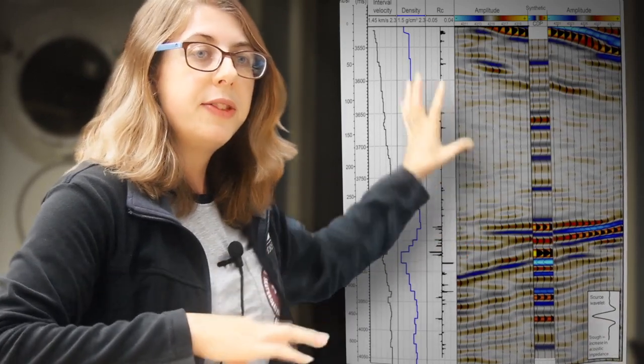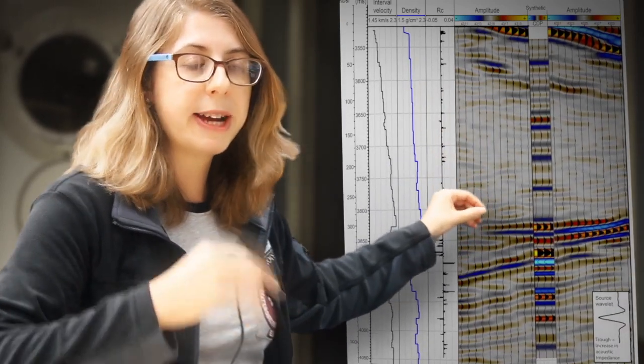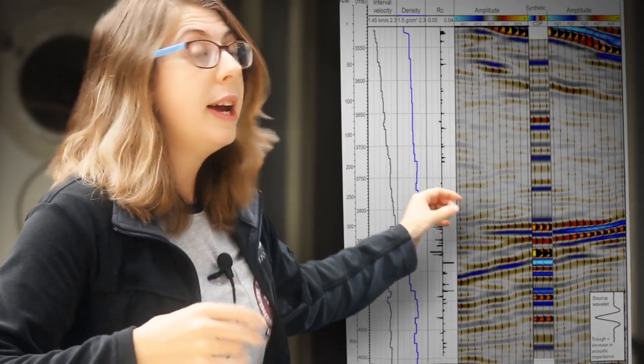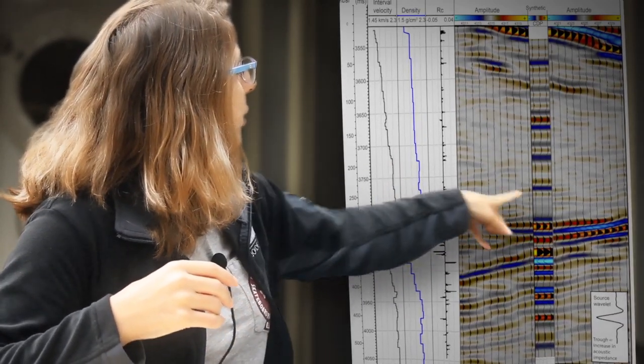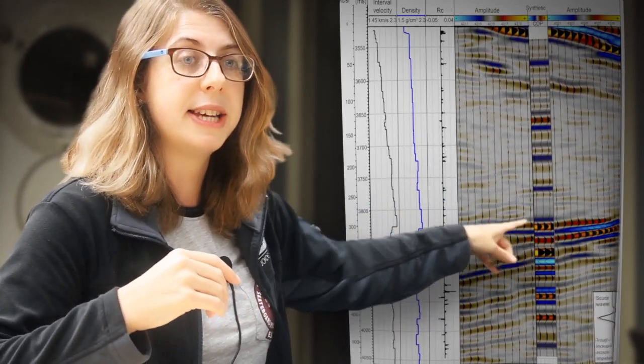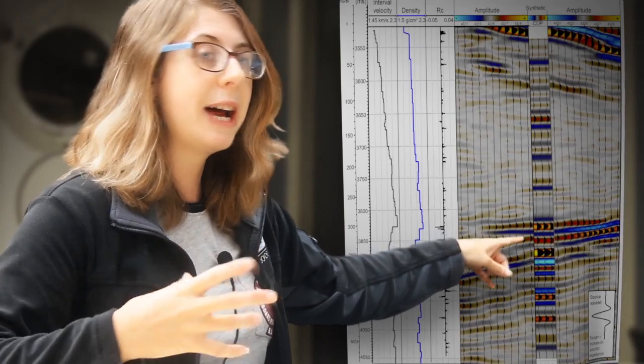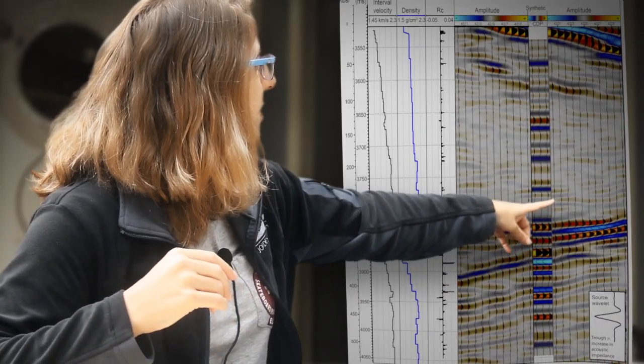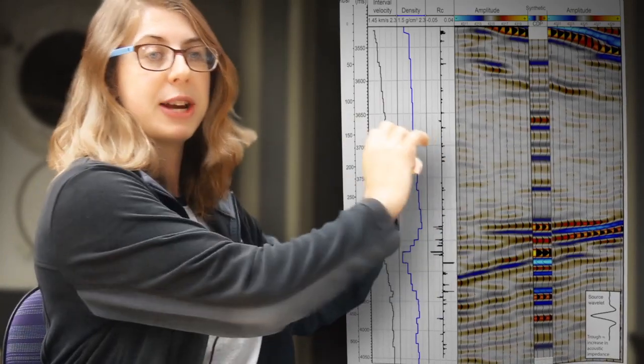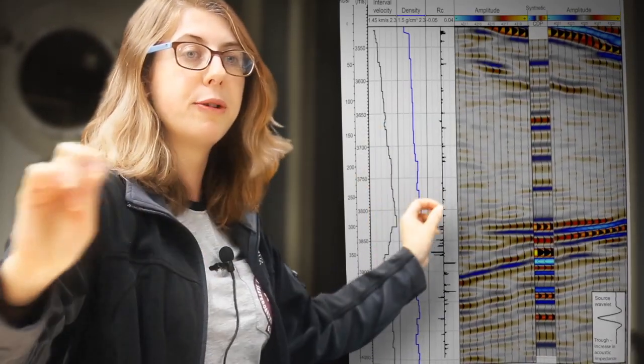This was taken over an area where we're expecting to find the Hikarangi subduction frontal thrust fault. And from the core data we know that that occurs around about here. We see really bright reflections here both in our synthetic and our real data. And that then allows us to map where the fault is from the core into the seismic data. And then we can trace that reflection out over our seismic profiles many tens of kilometers long.